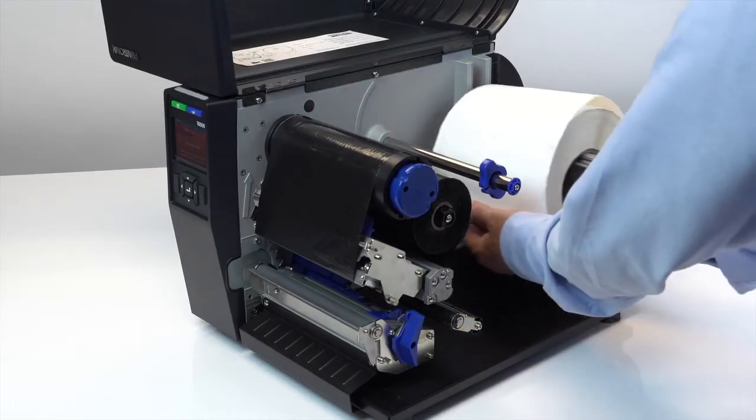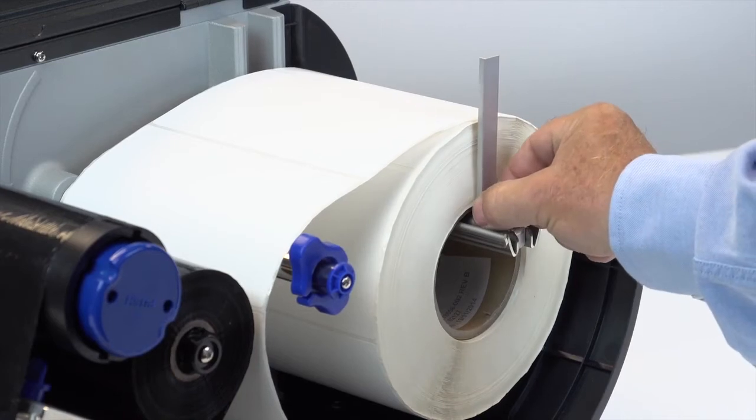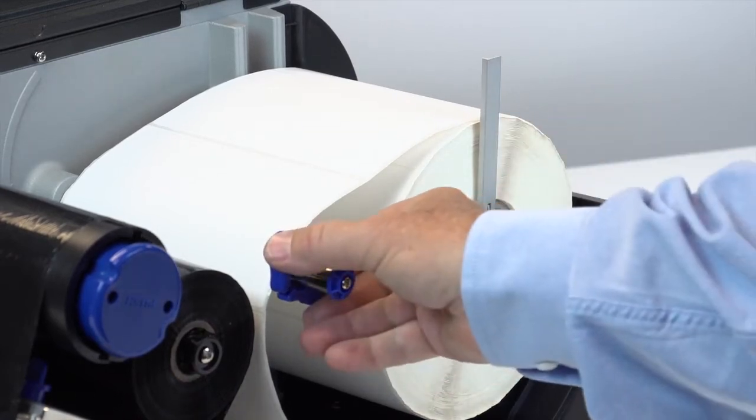When installing a media roll, slide the hanger guide close to the outside end of the hanger and place it in the horizontal position.